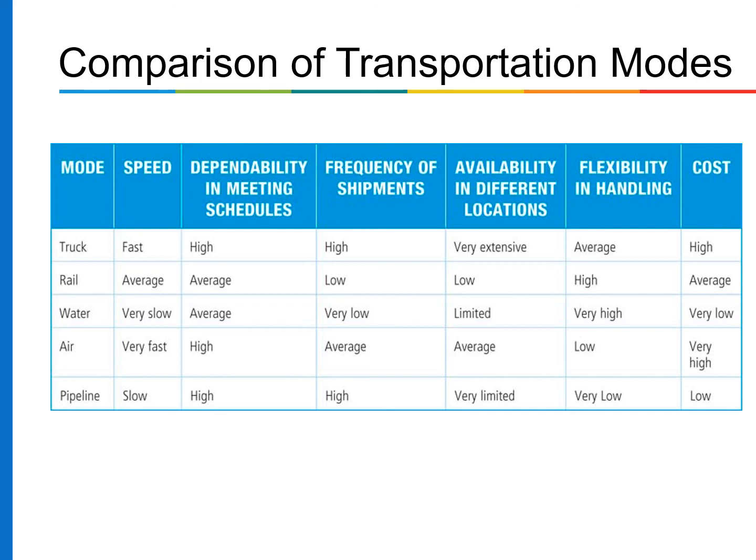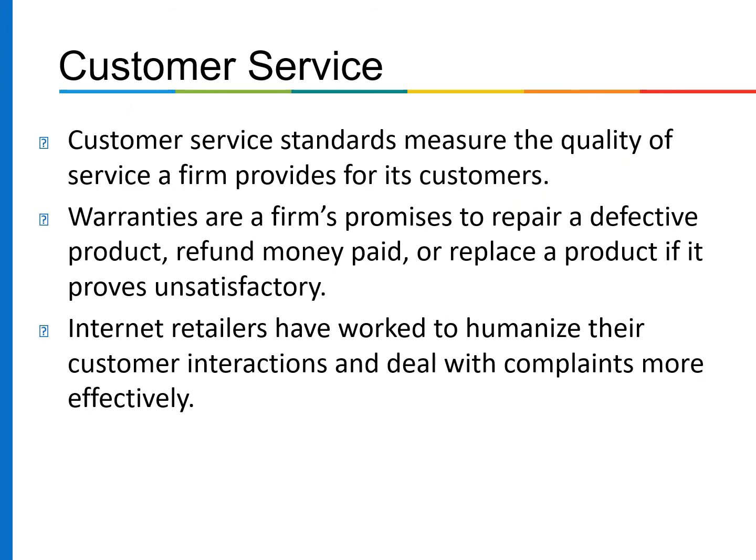A major aspect of logistics is transportation — the most appropriate mode depends on the product, channel, and customer needs; modes include truck, rail, water, air, and pipeline. Customer service is a vital component of both product and distribution strategies. Customer service standards measure the quality of service a firm provides. Warranties are a firm's promises to repair a defective product, refund money paid, or replace a product if it proves unsatisfactory. Internet retailers have worked to humanize customer interactions and deal with complaints more effectively.